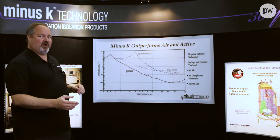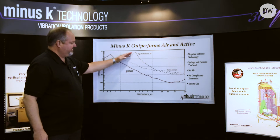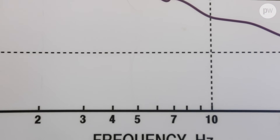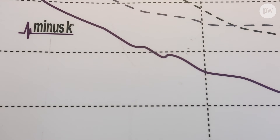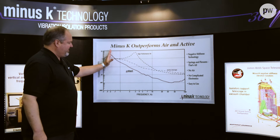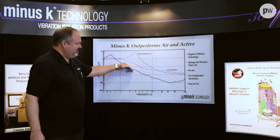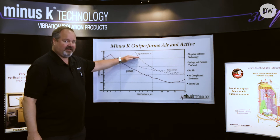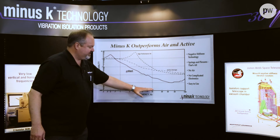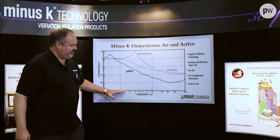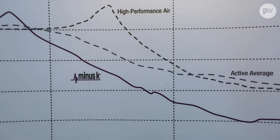The reason we want to have it that low is because air isolators tend to have a resonant frequency of around two to three hertz — typically, some are lower, some are higher. But with our half-hertz design, we start removing vibration before they even start amplifying. Consequently, we can really reduce problems that typically occur within buildings around one to ten hertz.